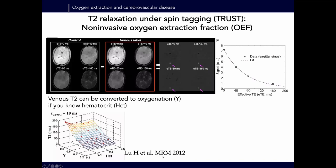This method was proposed by Hanzhang Liu around 2008. The general idea — called TRUST — is you do a spin-labeling prep to label the veins (not arteries), then another acquisition without labeling, acquiring data with different T2 weightings using a T2 preparation module with varying duration. It's non-selective, so less sensitive to inflow and outflow. You subtract to isolate pure venous blood, fit the signal to get T2, then look up oxygenation from calibration curves using T2 and hematocrit from a blood draw.